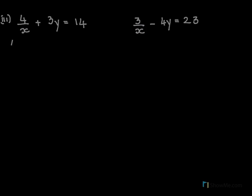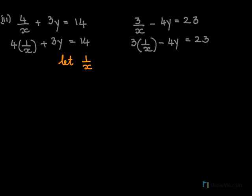So here again we do separate the coefficient from the variable. Here there is no problem, so I will just write 3y equal to 14. Here again 3, 1 by x, separate the coefficient from the variable minus 4y equal to 23. Then we say let 1 by x be equal to say a.